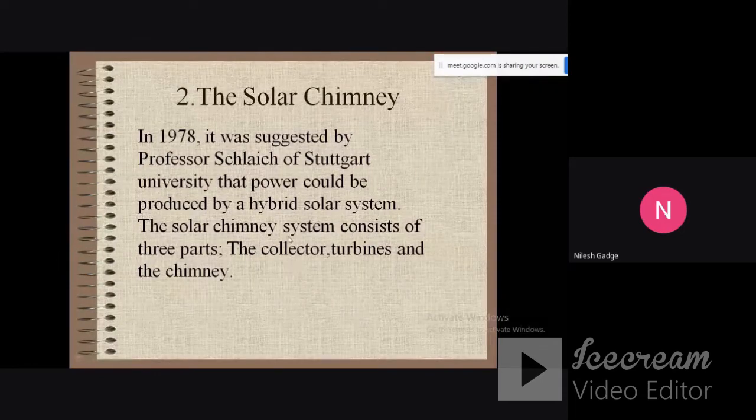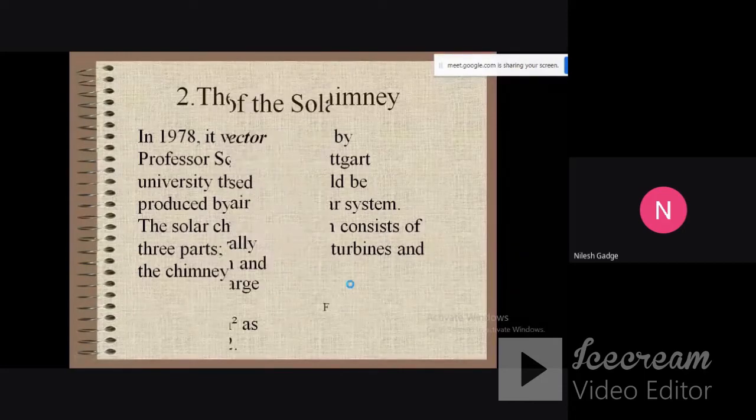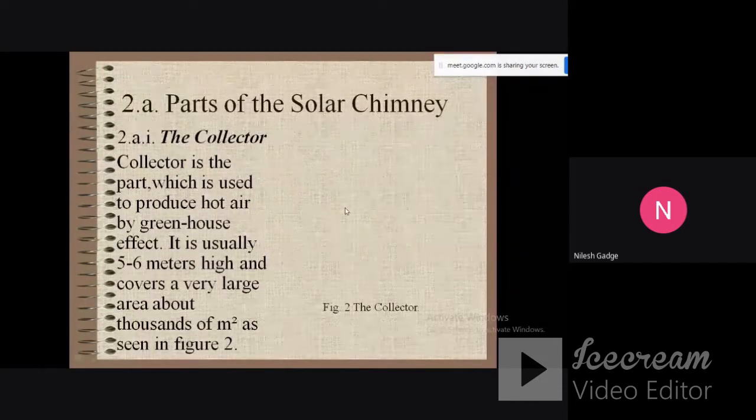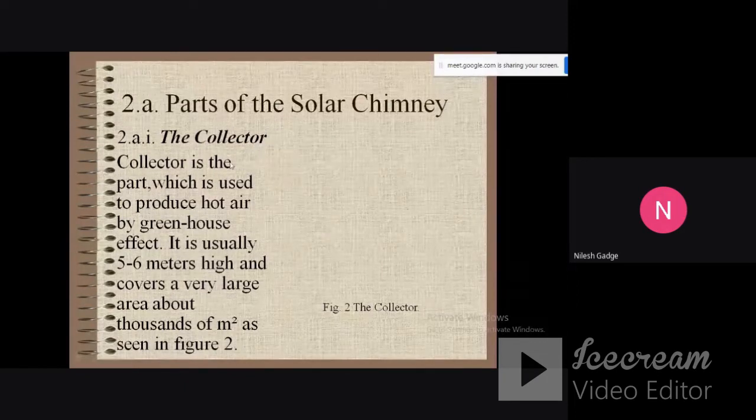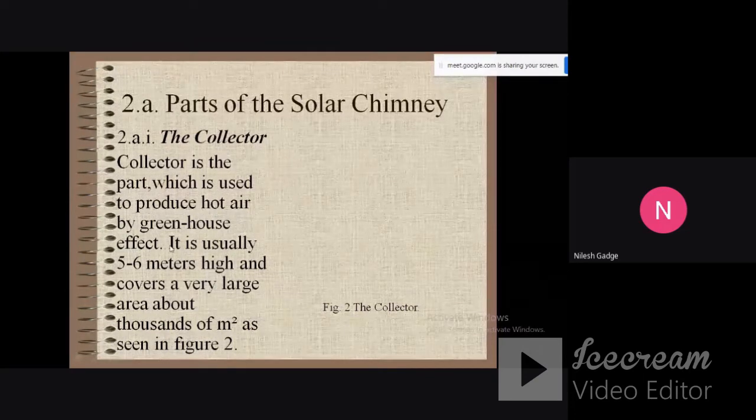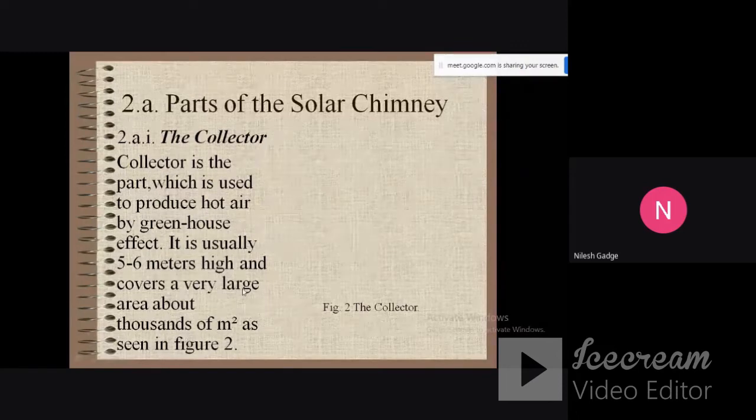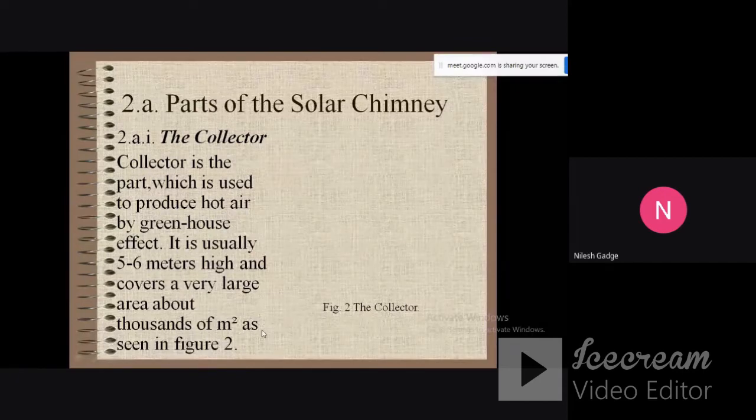The solar chimney system consists of three parts: the solar collector, turbines, and the chimney. The collector is the part which is used to produce hot air by greenhouse effect. It is usually five to six meters high and covers a very large area, about thousands of square meters, as shown in the figure.